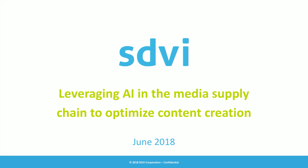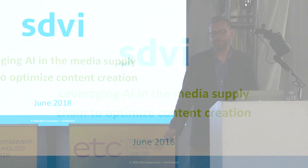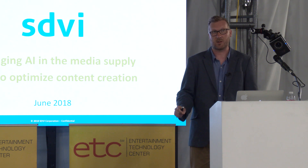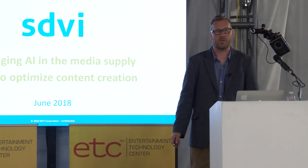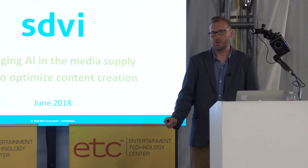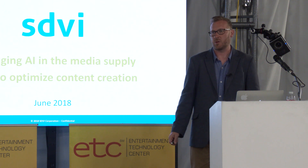Hi, I'm Simon Eldridge. Today I'm going to be talking about leveraging AI technologies in a media supply chain in order to optimize the content creation process. AI is an interesting topic right now. Everybody's talking about it and there are varying different use cases from automating the actual creation of content to mining archives to find the content that you have. Today I'm going to speak about a specific example of how we use AI technologies to really fine-tune the process of creating content for distribution internationally.